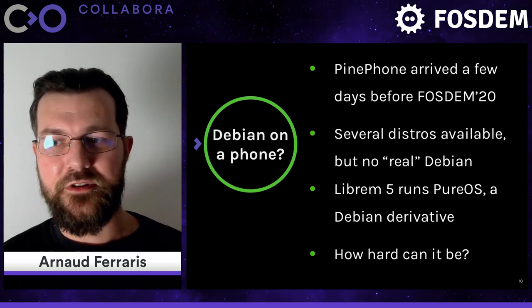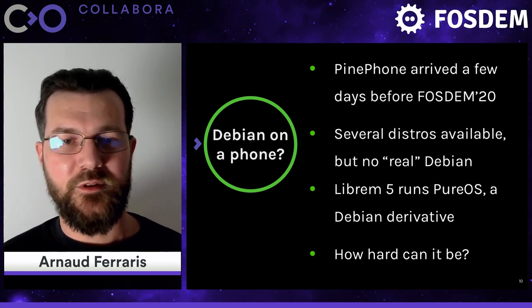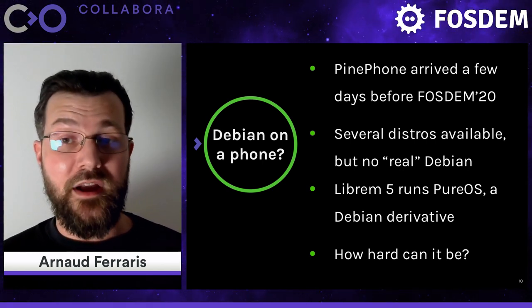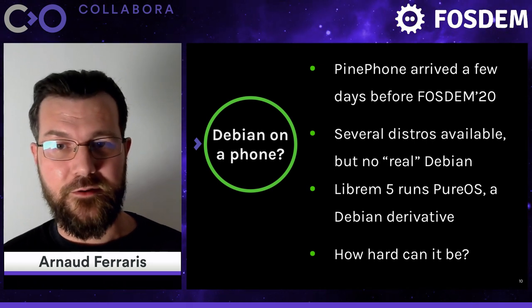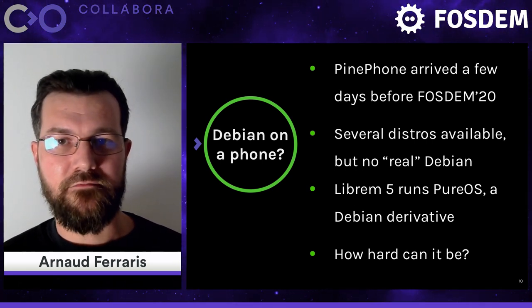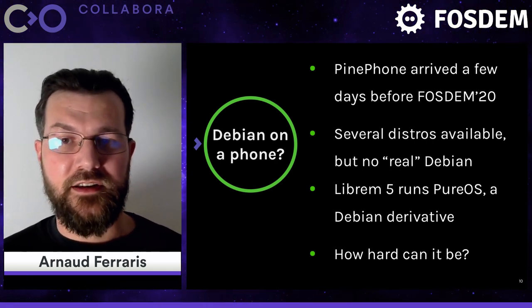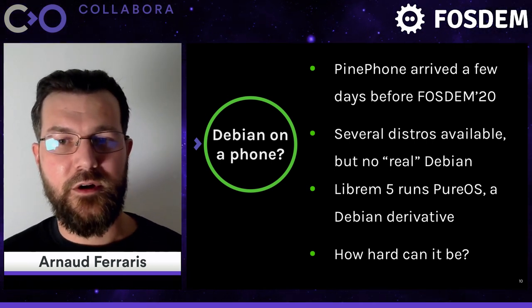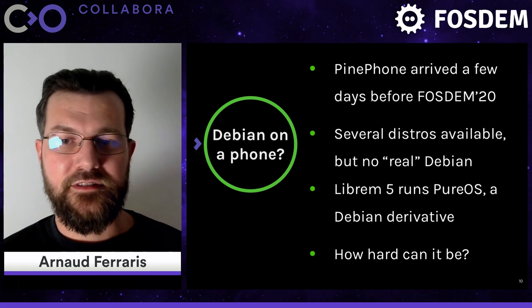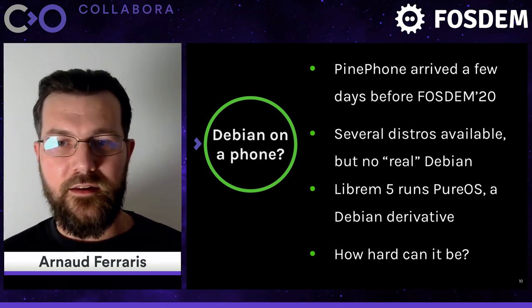So with these two new phones, could I be able to run Debian on my smartphone the same way I use Debian on all my computers? My PinePhone arrived a few days before FOSDEM 2020 — basically two years ago. There were already several distros available for it, but no Debian image was available at the time. I don't count Ubuntu Touch because it's Debian-based but quite different from a normal desktop Linux distribution, so this wasn't an option for me even though I tried it and quite appreciated the system.